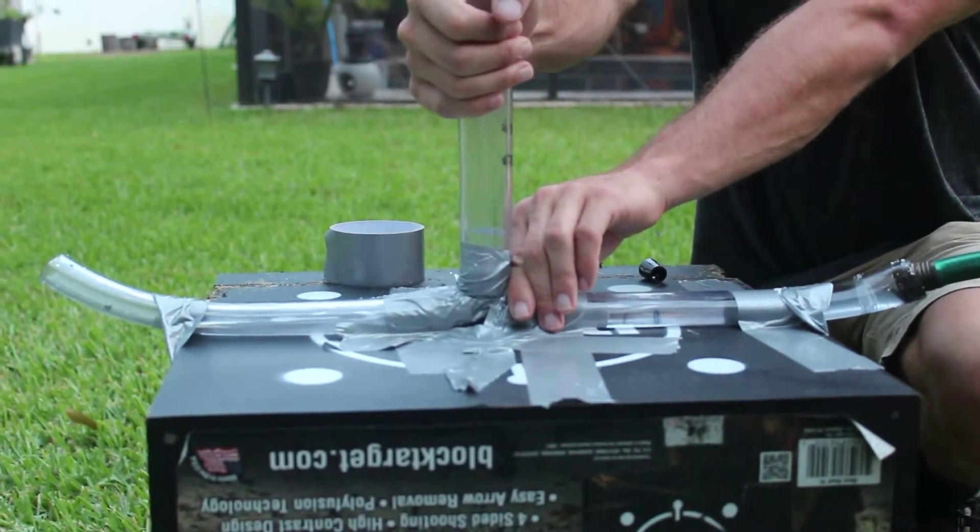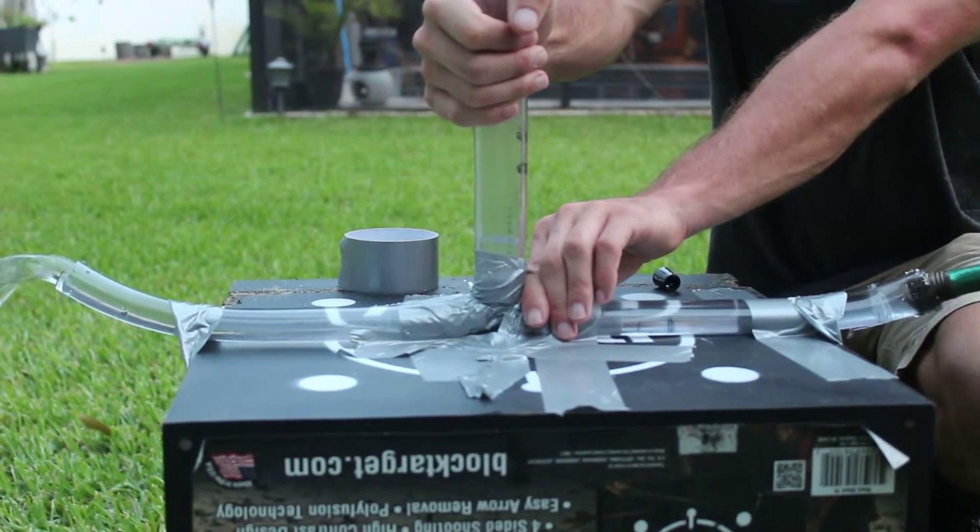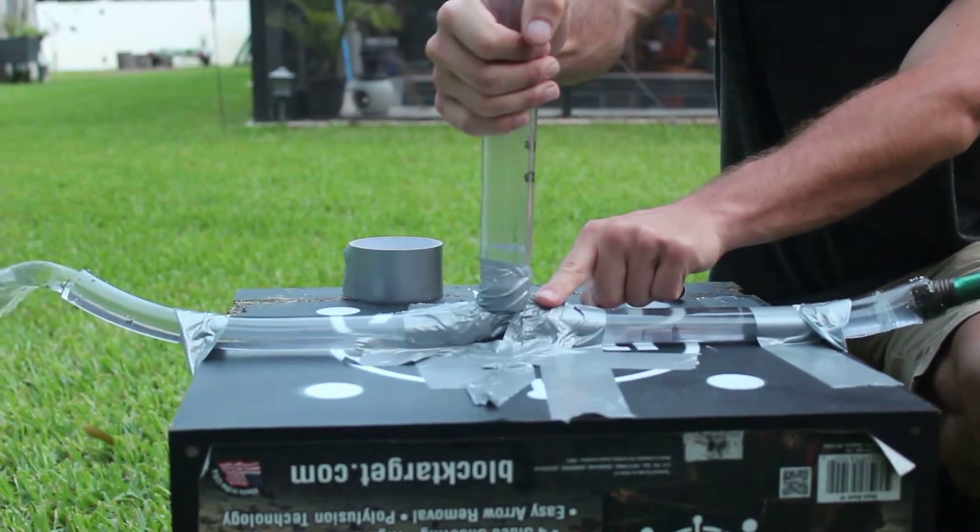For the first part of our experiment, we left the tube uncapped as a control to be compared to the other parts. Note that this time, there is no water in our vertical tube.